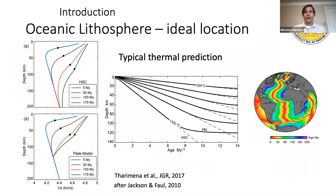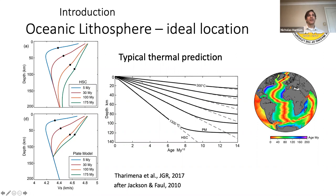Because most of Earth's plates are made of oceanic lithosphere, and the oceanic lithosphere is thought to be relatively simple, it's a no-brainer that this is the place to start. The only problem is it's covered by a pesky water layer, which makes in situ measurements quite difficult. The classic thermal definition is the half-space cooling model, which usually does a pretty good job of explaining observations.